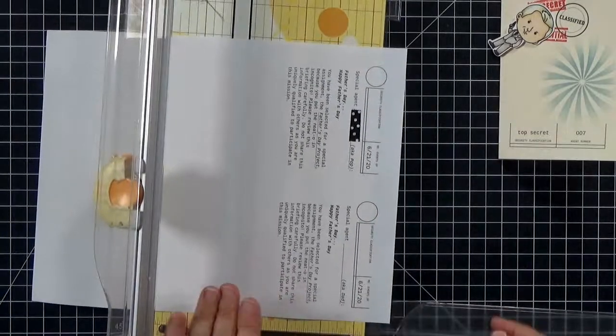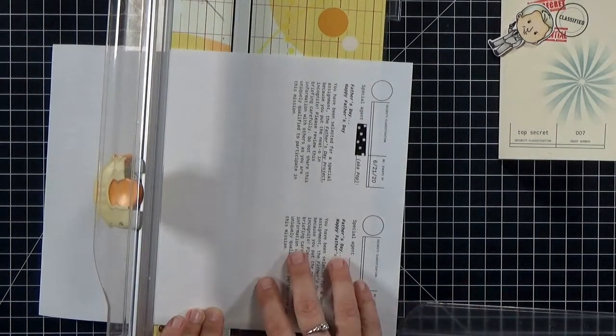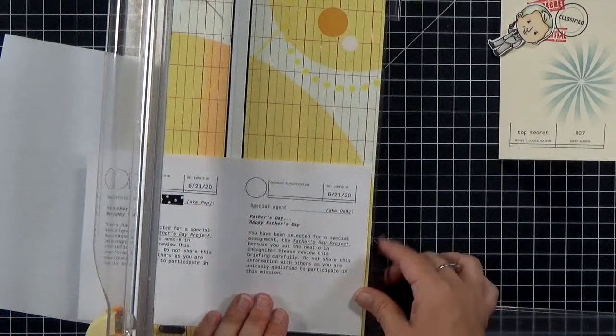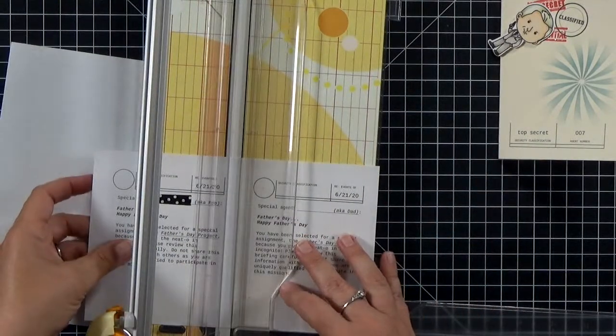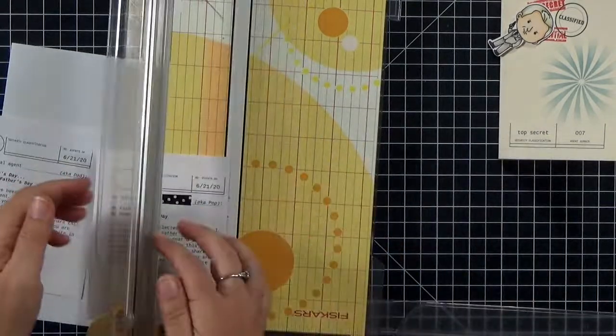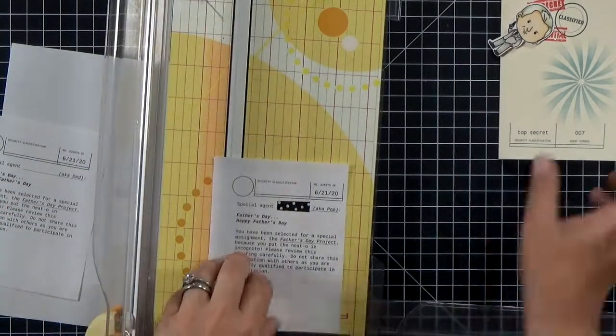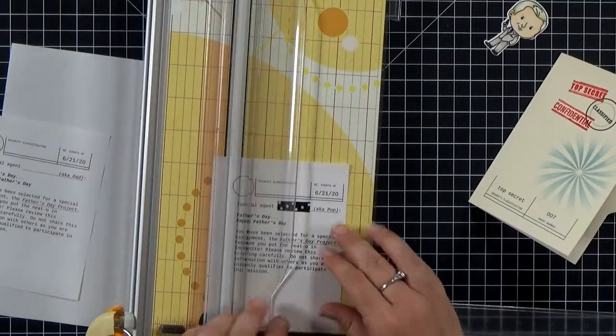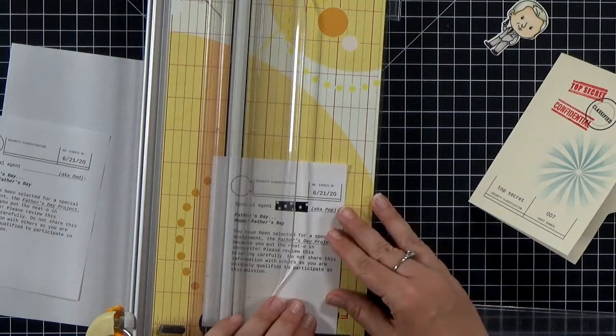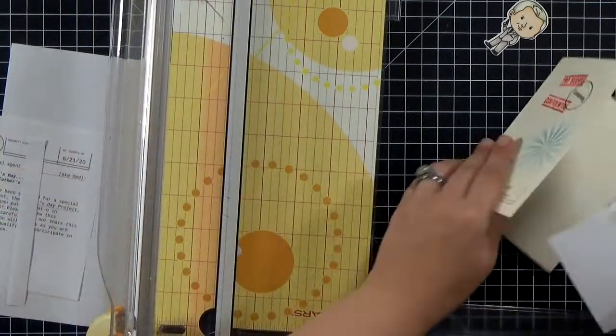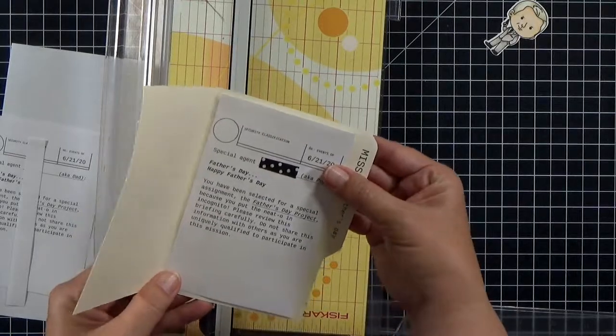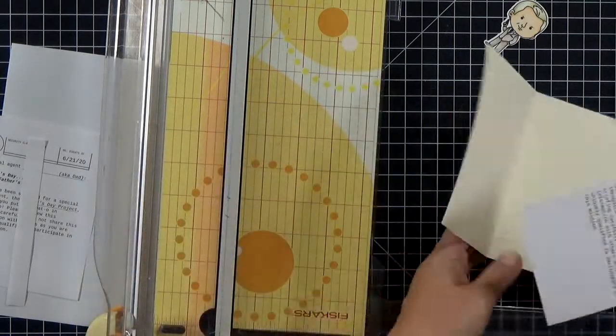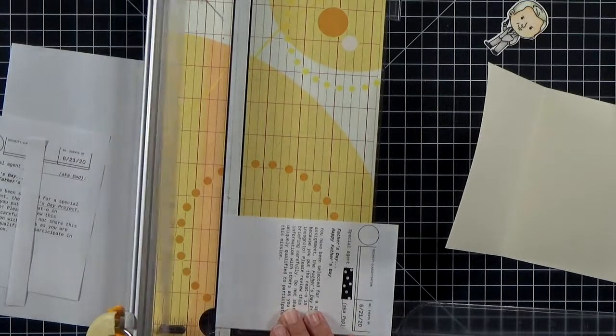So I ended up trimming this down. And like I said, you get both options, the AKA Dad or AKA Pop. Since I was printing this out myself, I actually typed out my dad's name and then redacted it with washi tape. But I'm trimming it out. It's going to end up being three and a half inches wide by five and one eighth inch tall. You have some wiggle room in either direction. So don't worry if you don't get it exactly there. But that's what I trimmed mine out to.